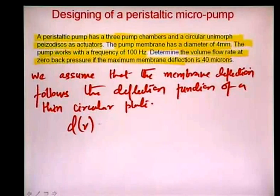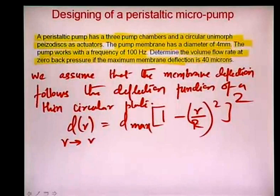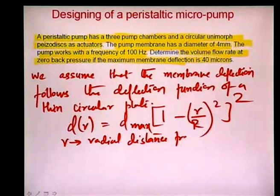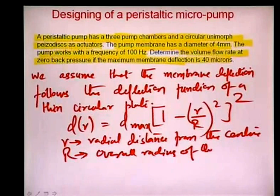We assume the deflection at radius r from the center equals d_max times (1 − (r/R)²)², where d_max is the maximum deflection at the center, small r is the radial distance from the center, and capital R is the overall radius of the membrane.